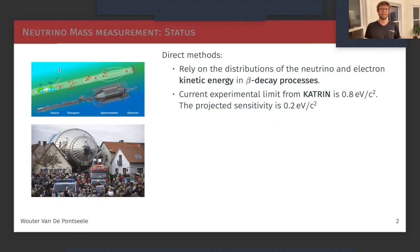This is the current status of the neutrino mass measurements. We have a direct method which relies on the distribution of the neutrino and electron kinetic energies in beta decay processes. Currently the leading experiment is CATRIN, a German experiment of a very big size which has a limit of around one electron volt and will go a bit further down in the coming years.